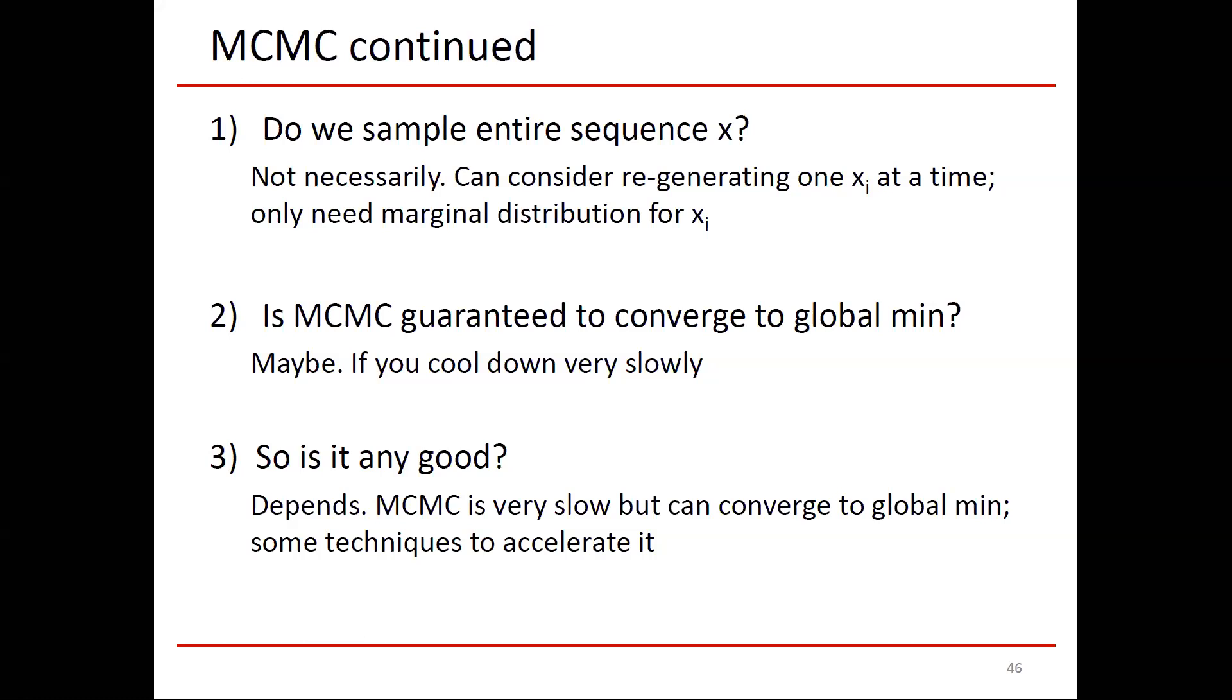The question you may have is, if it takes such a long time, is it any good? The answer is that it depends. MCMC is very slow. It can converge to the global minimum in a reasonable period of time. It has a tendency not to converge to the bad local minimums at first, because at first the temperatures are not too cold. And there are acceleration techniques. Overall it's a complicated area.